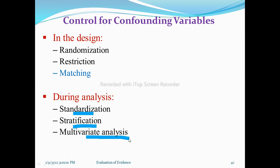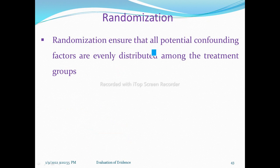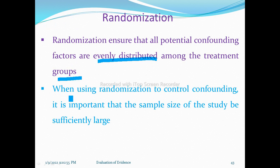Randomization ensures that all potential confounding factors are evenly distributed among treatment groups. Importantly, randomization can distribute both known and unknown confounding factors evenly. It is done at the design stage. When using randomization to control confounding, it is important that the sample size of the study be sufficiently large.